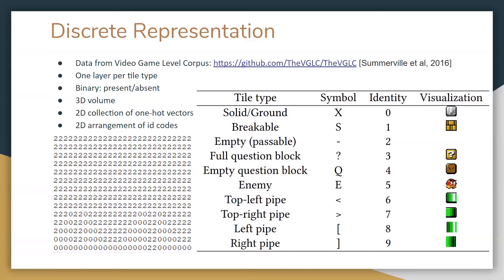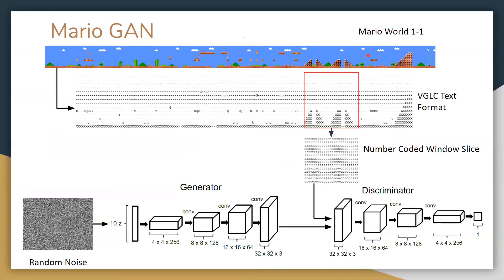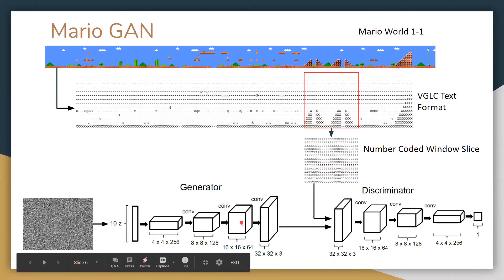Another way to think of this 3D volume is as a 2D organization of one-hot encoded vectors, because each vector has exactly one value of one and the rest are zero. This is suitable to train a GAN for Mario. We take the first level of Mario in the VGLC representation, slide a window of a certain size across it, extract the numeric data encoded in the one-hot fashion — that's the input to the discriminator — contrast it with the GAN inputs, train this, and eventually get a GAN that can produce Mario levels.